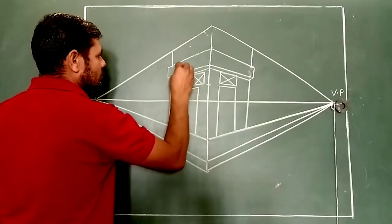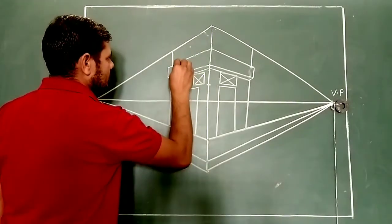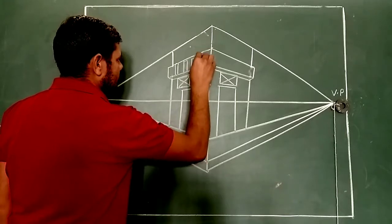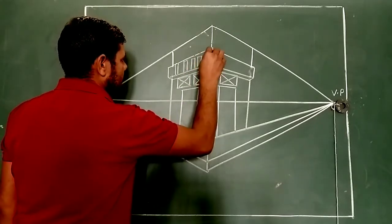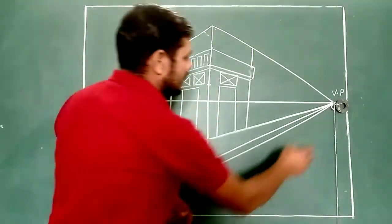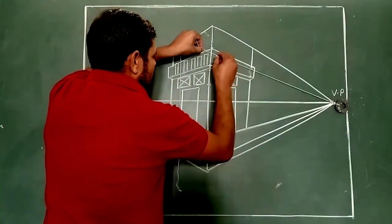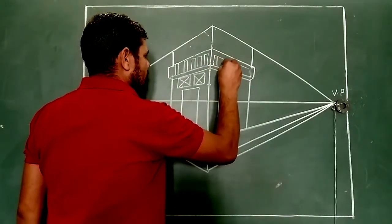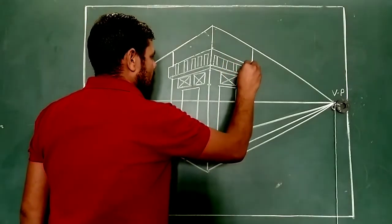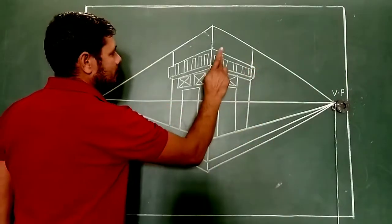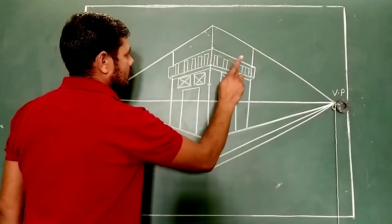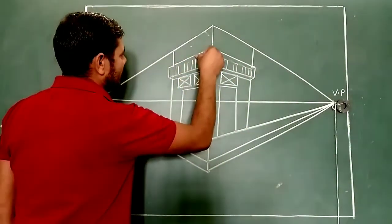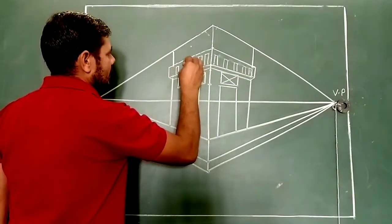Here we make some design also. We make some design freehand, and also with the help of tools to judge the perfection. With the help of tools, make a perfect design. Tell me — which is right, this or this? This is right. Then we use this tool like this.